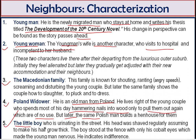The fifth character we find in the story is the little boy who is urinating in the street. It shows how indifferent people were in such a migrated land. His head was shaved regularly, assuming to make his hair grow thick. The boy stood at the fence with only his cobalt eyes, which made the young man nervous and afraid. This little boy symbolizes indifference in the story.